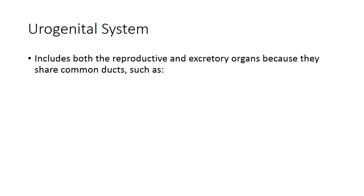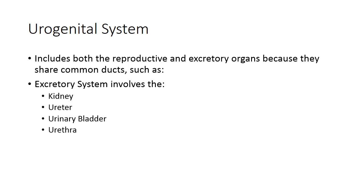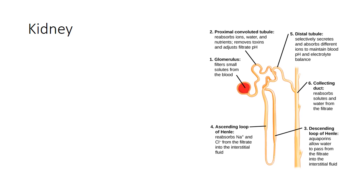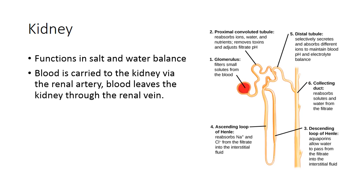The urogenital system includes both reproductive and excretory organs because they share common ducts, such as the mesonephric duct and the cloaca or urethra. The excretory system involves the kidney, ureter, urinary bladder, and urethra — this is the order that filtrate travels to be excreted. The kidney functions in salt and water balance, filtering waste and producing urine. Blood is carried to the kidney via the renal artery and leaves through the renal vein.